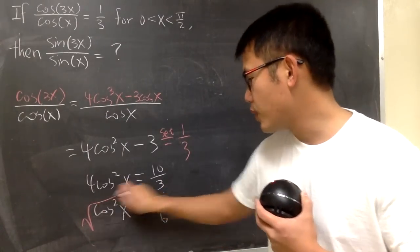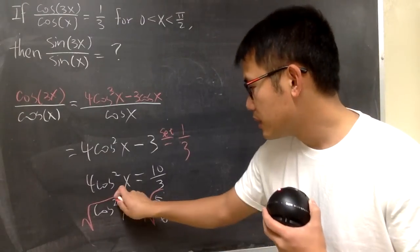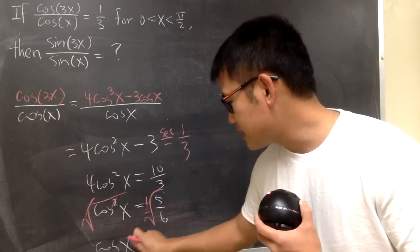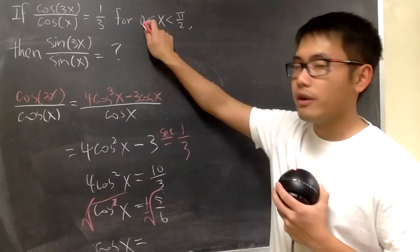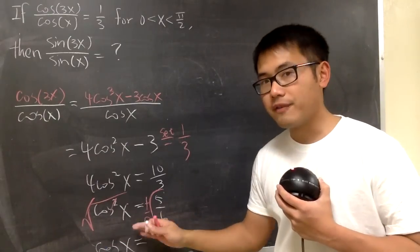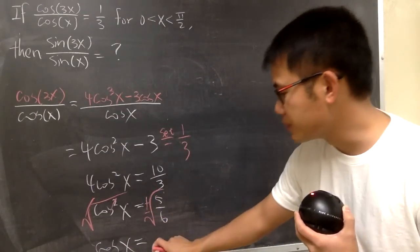Here we will take the square root on both sides, plus minus. We get cos(x) equal to... Now, because x is in between 0 to π/2, namely the angle is in the first quadrant, cos during the first quadrant, we know it's positive. So we'll just take the positive version of the square root.